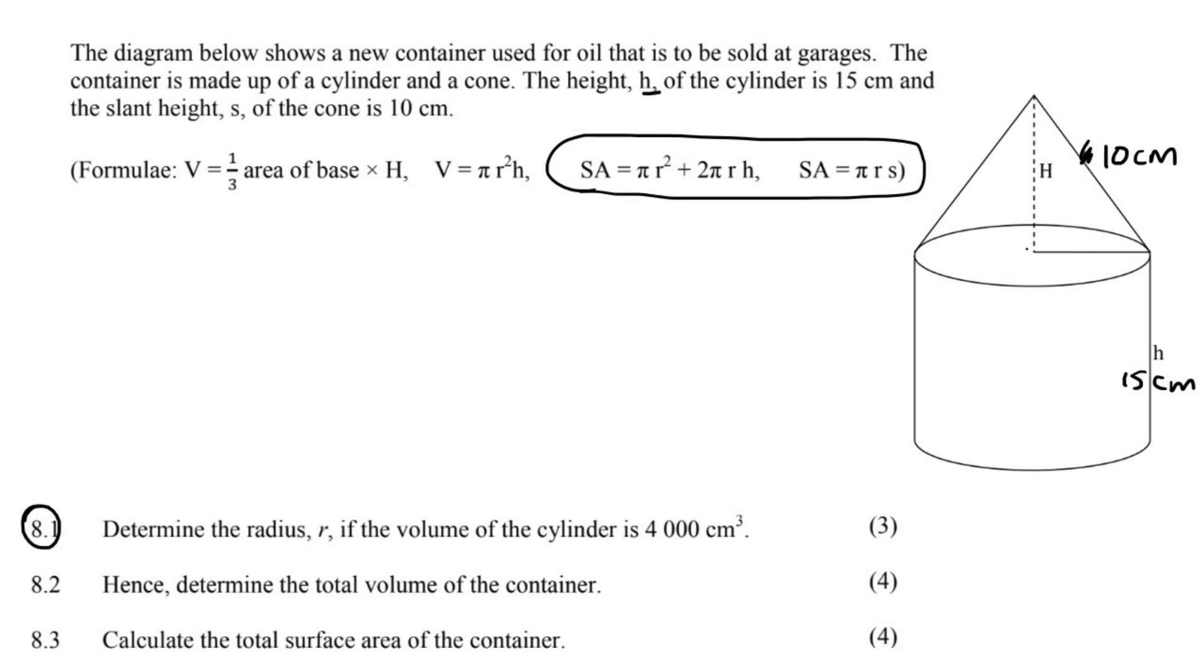The first question: determine the radius if the volume of the cylinder is 4,000. So the volume of the cylinder is 4,000. Now, we know that the volume of a cylinder is definitely going to be one of these, and you need to know which one it is. It's this one. You need to know that. You need to understand exactly how it works. So it's going to be π r² h. And with volume, we don't need to modify formulas. It's only with surface area where things can get a little funkier.